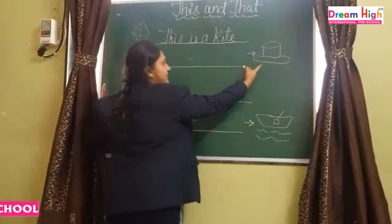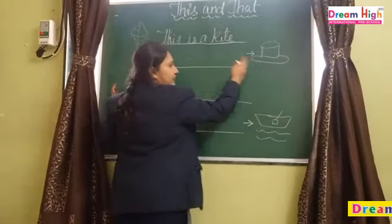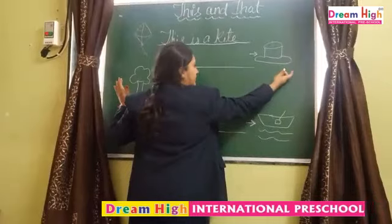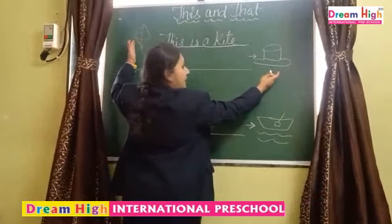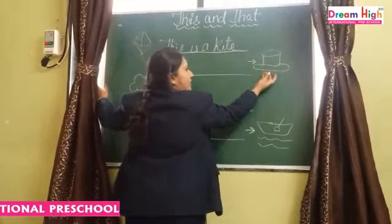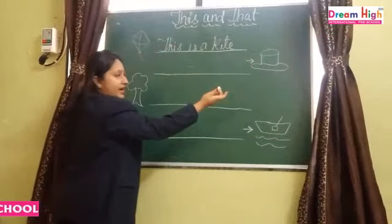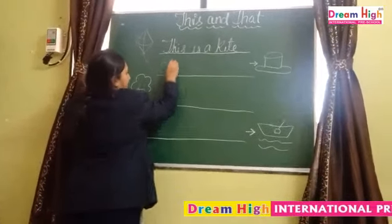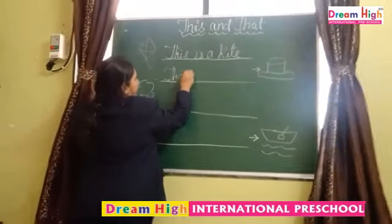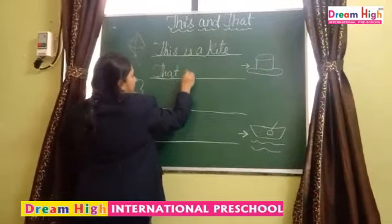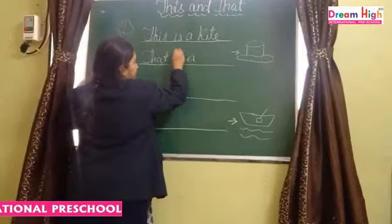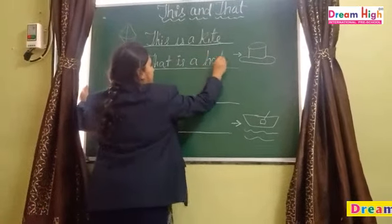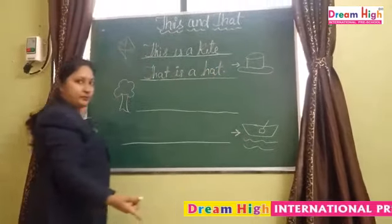And what is this? Hat. Hat is on my right side — left side, right side. What will we write for the right side? That. 'That is a hat.' Okay children?